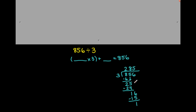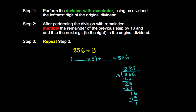Now let's actually go through and explain why this actually works — why the standard algorithm actually works. Here are the steps. The first step is to perform the division with remainder using the leftmost digit of the original dividend. The original dividend is 856, so the leftmost digit is 8. We're going to be performing division with remainder on each of these digits: on the 8, the 5, and the 6.